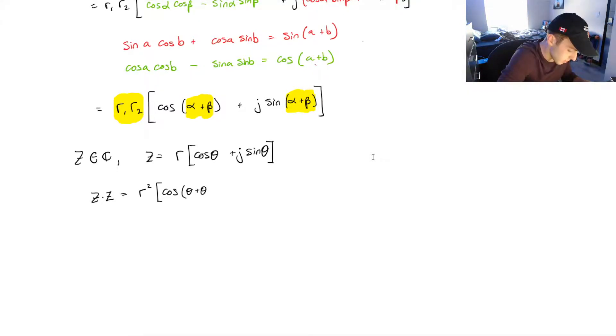So, it'll be theta plus theta. And this will simplify to cosine of 2 theta plus j sine of 2 theta.